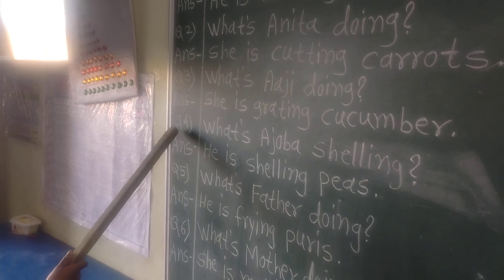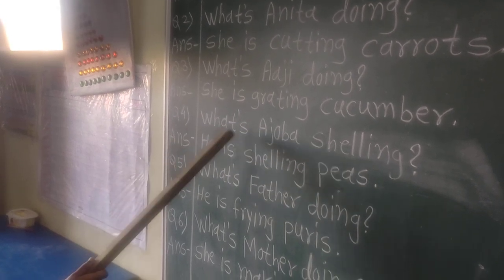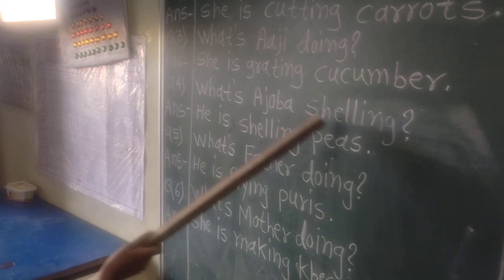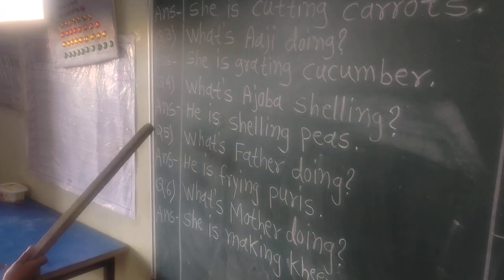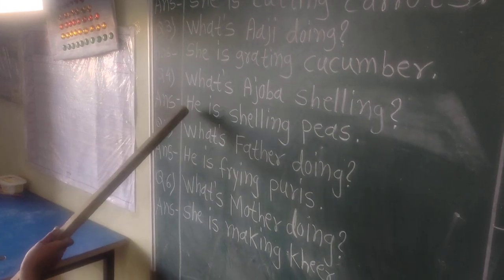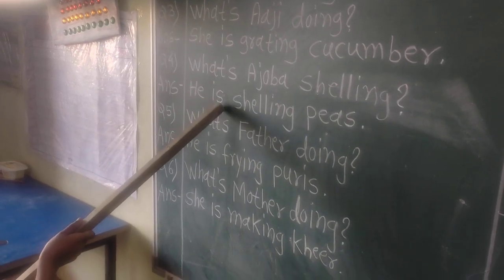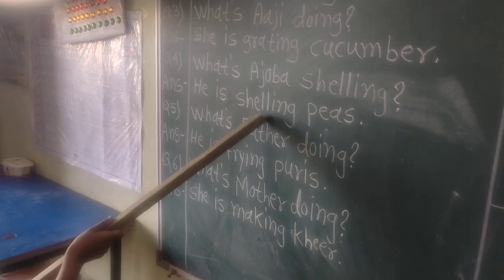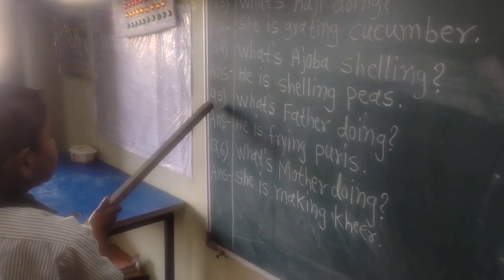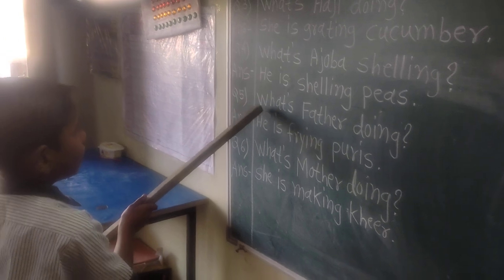Question 4. What's Anil doing? Answer. He is selling peas.